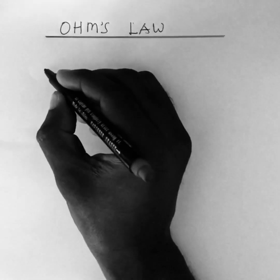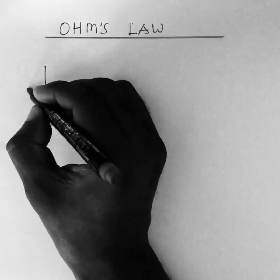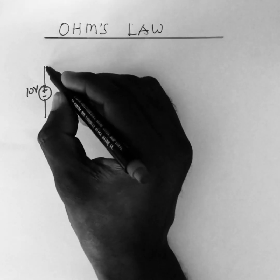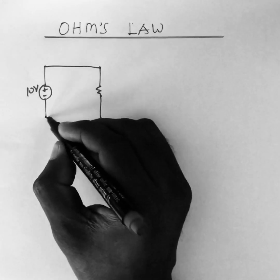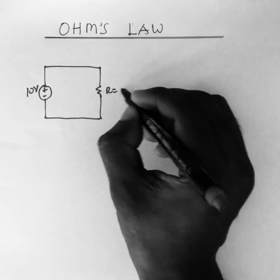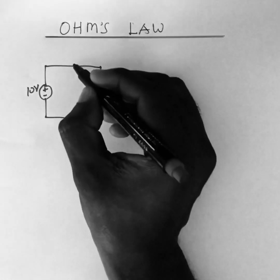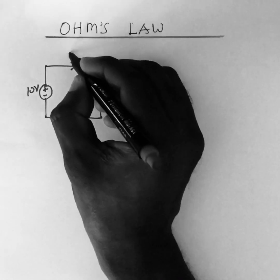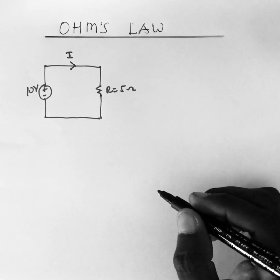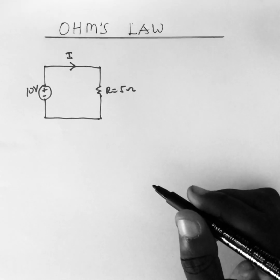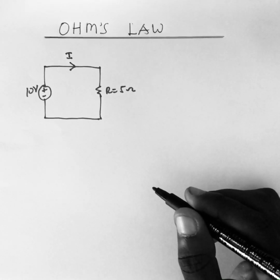Now let's consider a circuit with a 10 volt voltage source connected across a resistor of 5 ohms. The voltage source is going to drive current through the resistor, and we want to find the value of i flowing through the resistor. This approach leads to a very important and popular concept we call Ohm's Law.